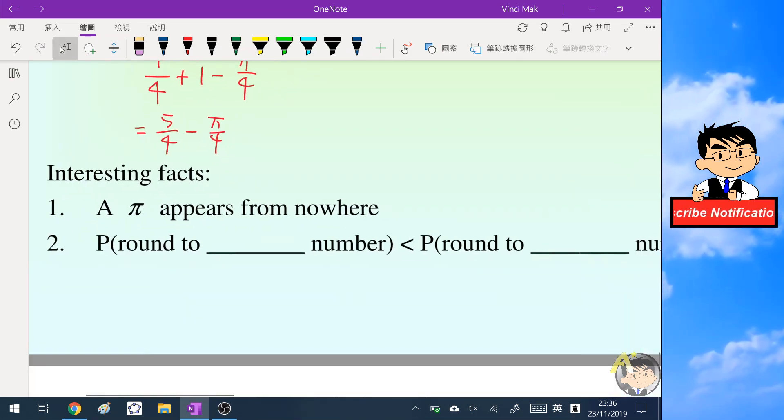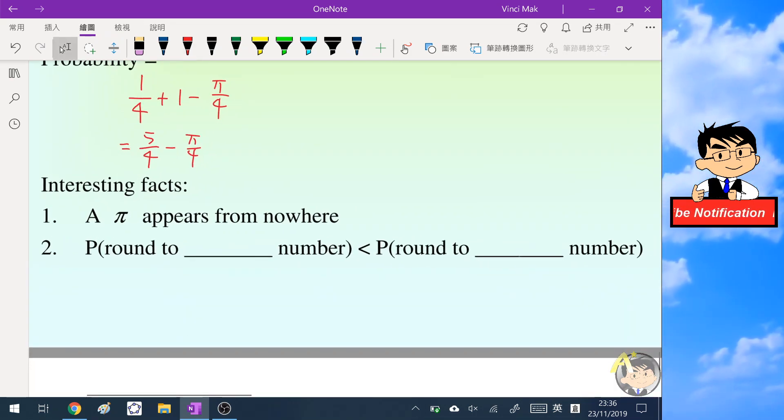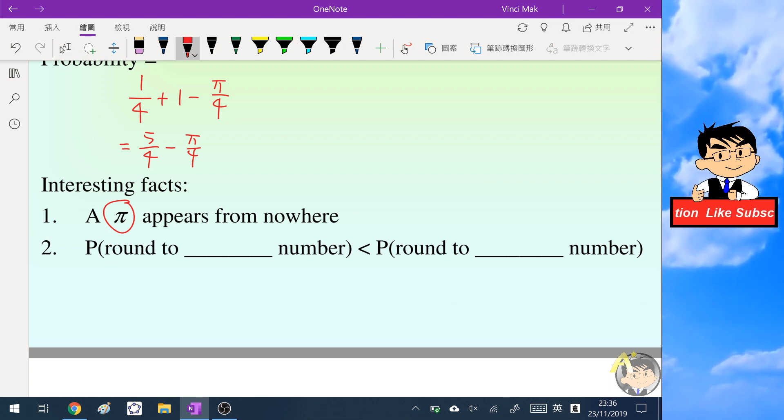So we can have two interesting facts. The first one is that π appears from nowhere. And then the second one is we find that the probability of rounding to an even number is not equal to the probability of rounding to an odd number. In fact, the probability of rounding to an even number is less than that of rounding to an odd number.